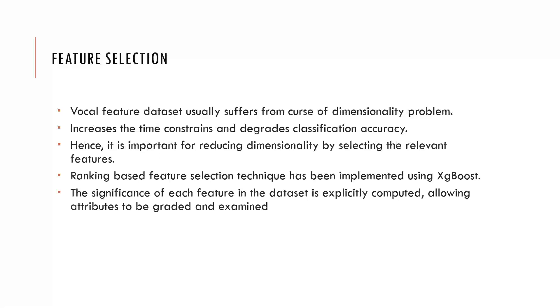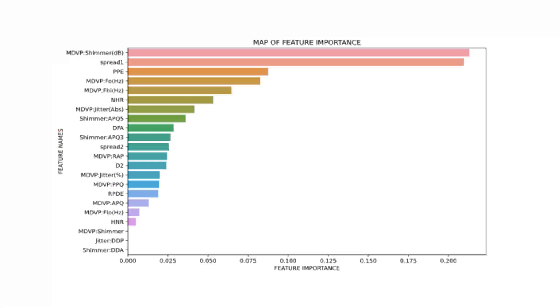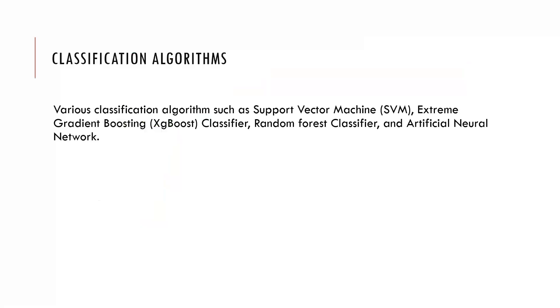Here you can see this is the map of the feature importance. Here you can see at the bottom features such as shimmer DDA, MDVP shimmer, jitter DDP have very little or tend to zero feature importance. In this step, the important features are separated from the original dataset to create a separate feature vector by ignoring the features which have feature importance nearly tending to zero which do not contribute to the classification score.